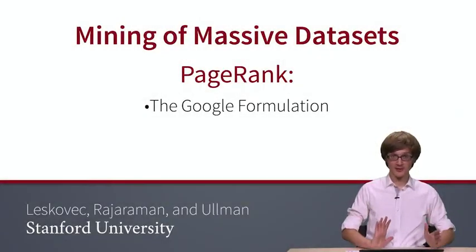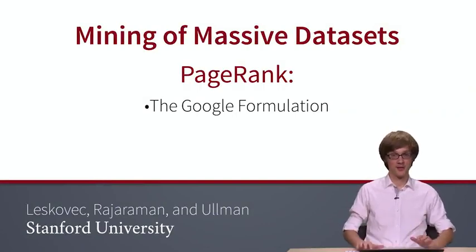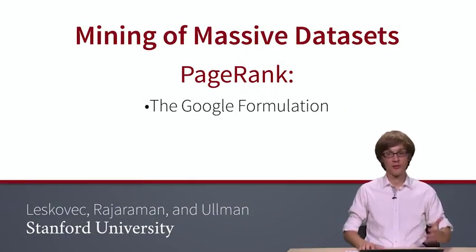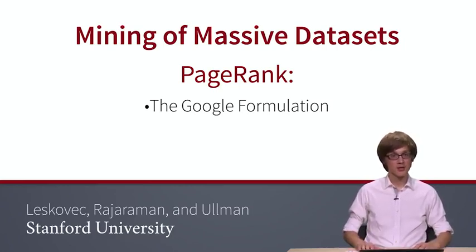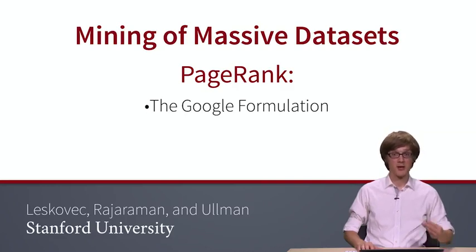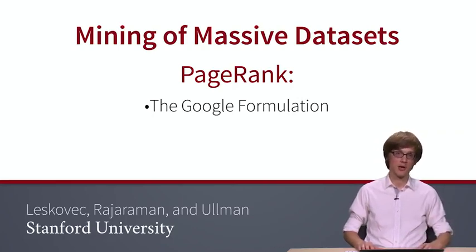So far, we looked at the PageRank formulation, we looked at the linear algebra formulation, and we now looked at the random walk intuition of PageRank. In the last slide of the previous lecture, we said that under certain conditions, the PageRank vector will be unique. So now the question is: what are these certain conditions that matrix M has to satisfy in order for the PageRank to exist and to be unique? What we will learn now is basically the real Google formulation of the PageRank algorithm.